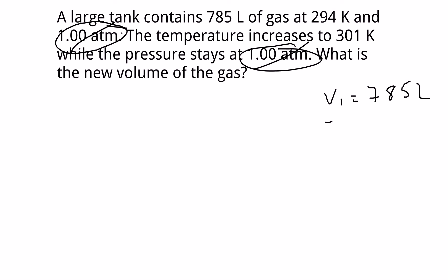and the V1 is equal to 785 liters. And then I have a T1, and my T1 is equal to 294 Kelvin. And then if I look, it says the temperature increases. So I have a T2.